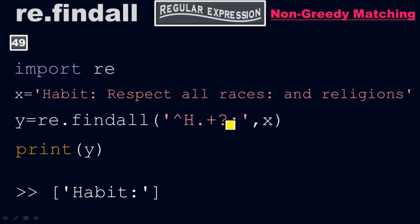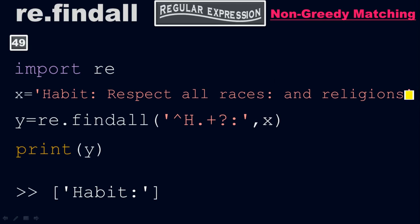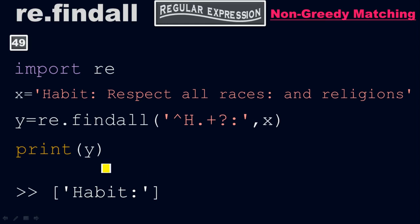If you put the question mark after the plus, we will have only one occurrence — we won't jump to the second occurrence. If you remember last time with a greedy nature, even with colons up to 'religions,' it would go from the caret all the way to the last colon. But since it is non-greedy matching right now, we go up to only the first colon. Therefore, we have only 'habit with colon' as the output.